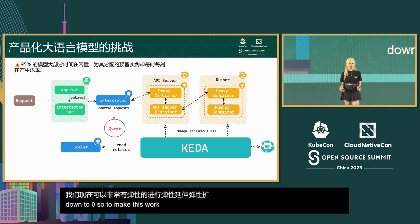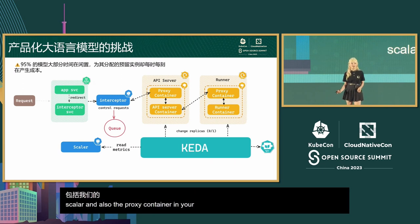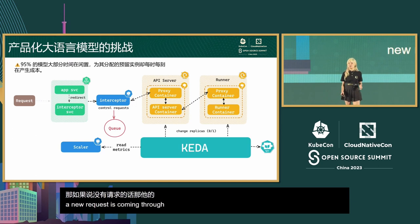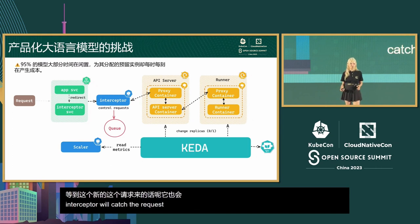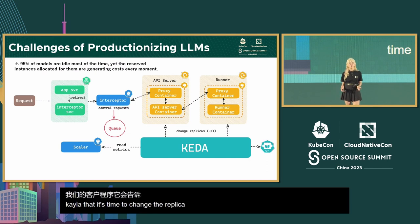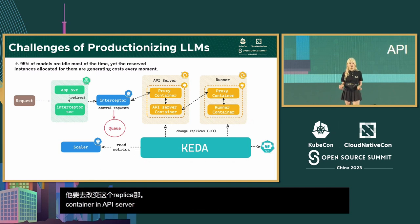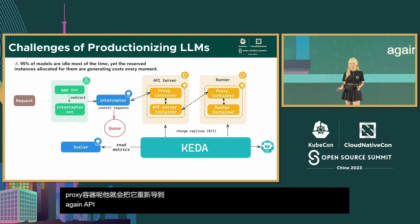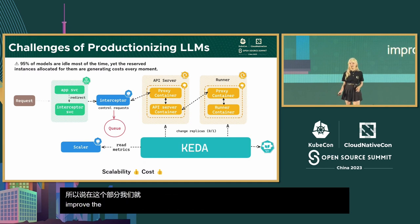To make this work, we need three new components: the interceptor, the scaler, and a proxy container in your API server and runner. If all replicas are zero and a new request comes in, it is redirected to our interceptor, which caches the request into a queue. The scaler then acts as an external scaler to tell KEDA it's time to change the replica count. Once KEDA has done its work, the proxy container in the API server consumes the request from the queue, redirects to the API server, which in turn triggers the runner's scaler.